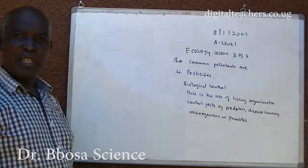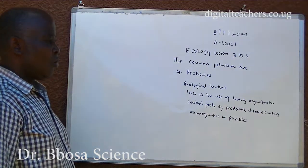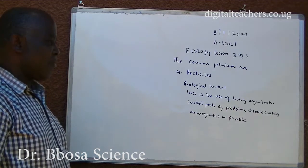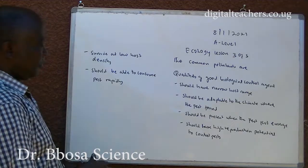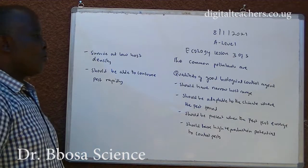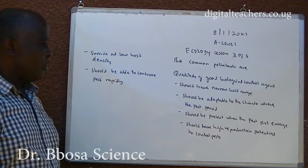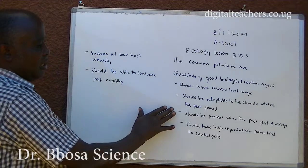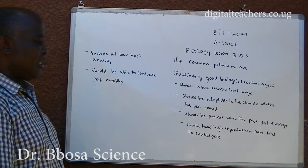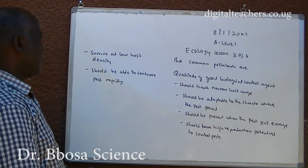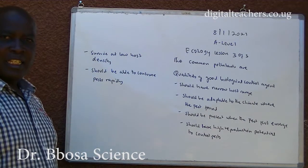An alternative pest control is biological control. This is the use of living organisms to control pests, for example predators, disease-causing microorganisms, or parasites. Qualities of a good biological control agent: should have a narrow host range; should be adaptable to the climate where the pest is found; should be present when the pest first emerges; should have high reproduction potential to control pests; should survive at low host density; and should be able to consume pests rapidly.